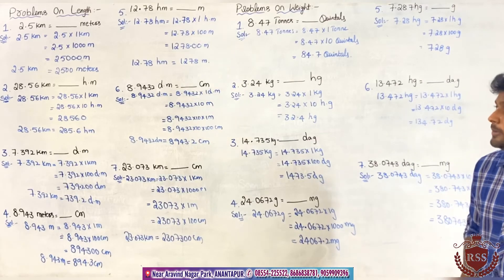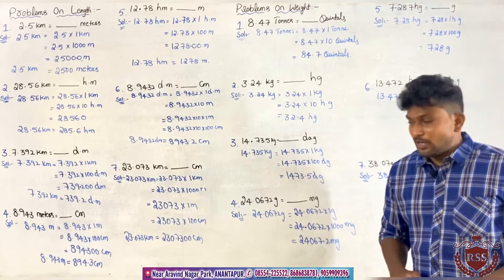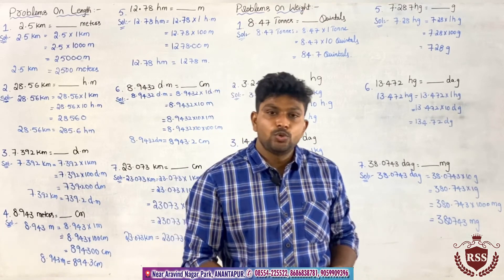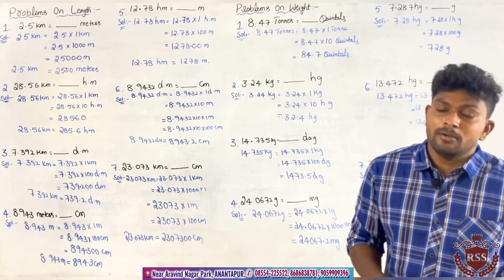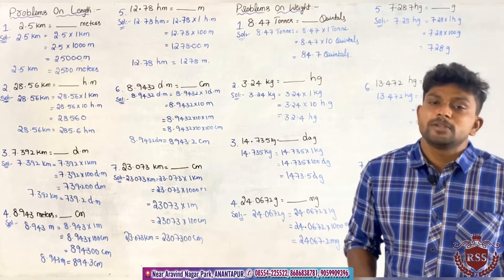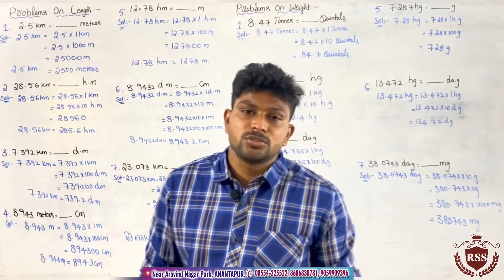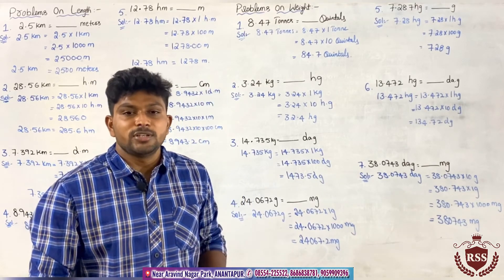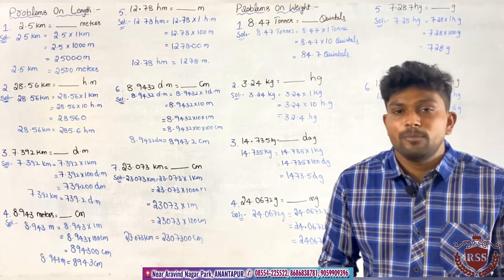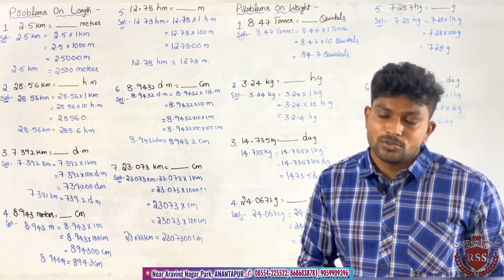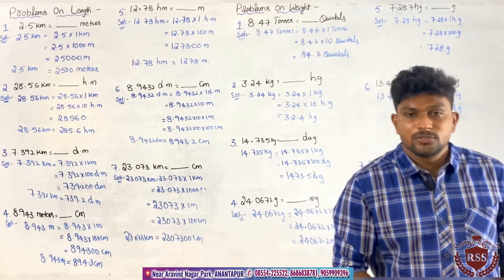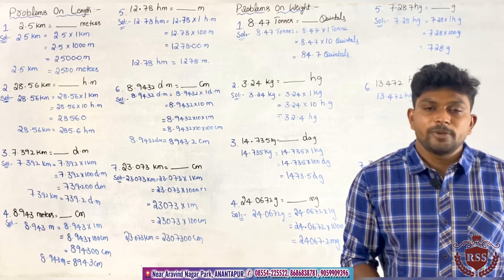This covers all problems related to length and weight. The remaining topics — problems on volume or capacity, time, and articles — will be completed in the next class. You must read those units carefully, as they are the major concepts. If you do not have an idea about those units, it is not possible to solve these questions. Thank you.